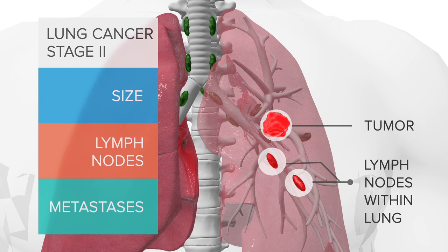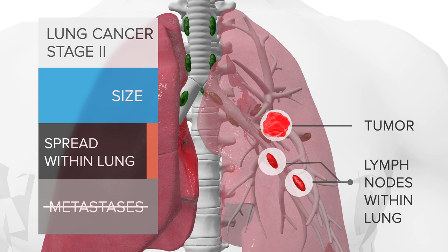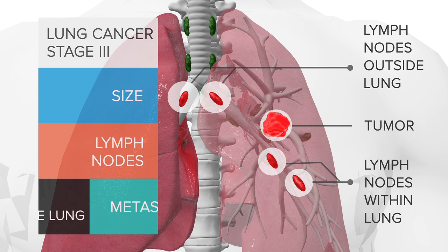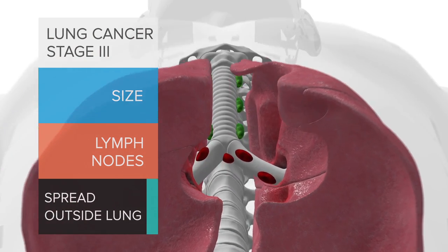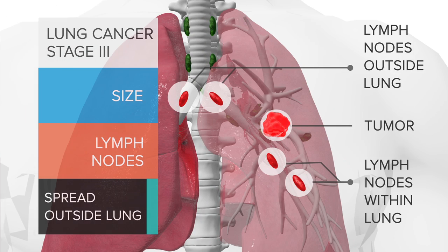Patients who have lymph node spread within the lung are stage two. Those patients must be staged very carefully, because it's been shown that giving chemotherapy to patients with stage two disease — disease in the lymph nodes within the lung — helps them live longer. If lymph node disease is outside the lung but still in the chest, that moves the patient to stage three, which has a different prognosis than stage two or stage one.